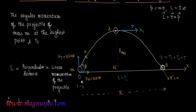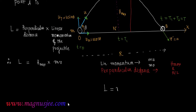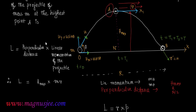At the highest point A, the projectile moves with velocity v, so the linear momentum is mv. The perpendicular distance from the highest point is h_max. Therefore the angular momentum L equals h_max into mv.